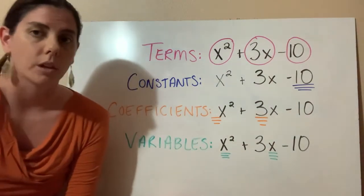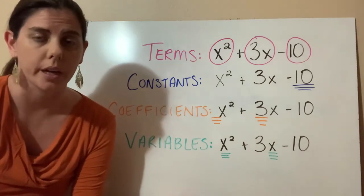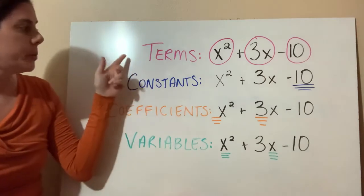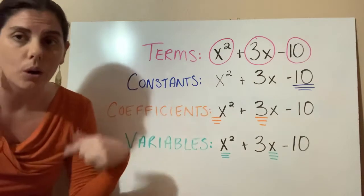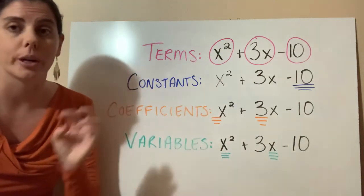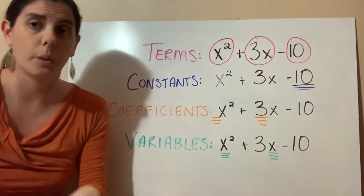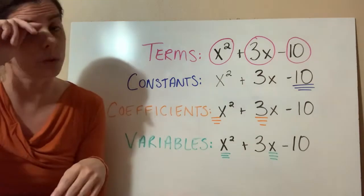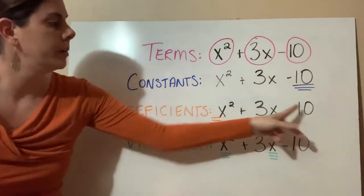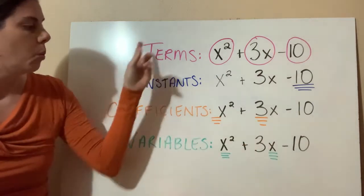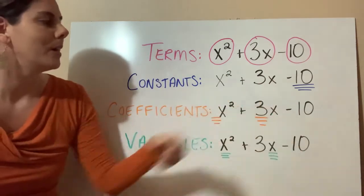Some more vocabulary that we want to make sure we understand from chapter 2, and this is in section 2.2 in your text. We're going to understand the difference between terms, constants, coefficients, and variables. These are all vocab terms that you're going to be hearing throughout math 1 and math 2, so we want to make sure we understand what we're talking about. We're going to use the same expression here and pick out the definition of each of these.